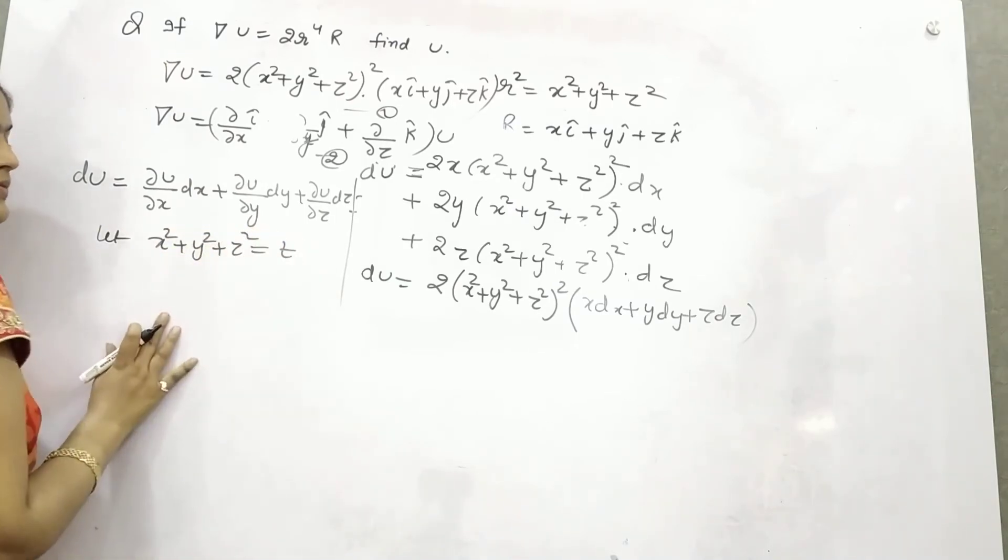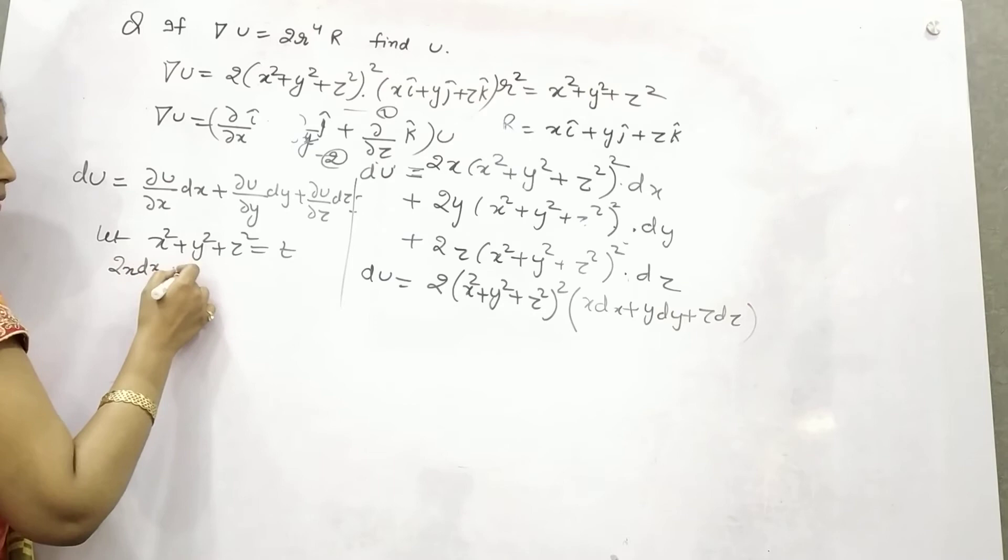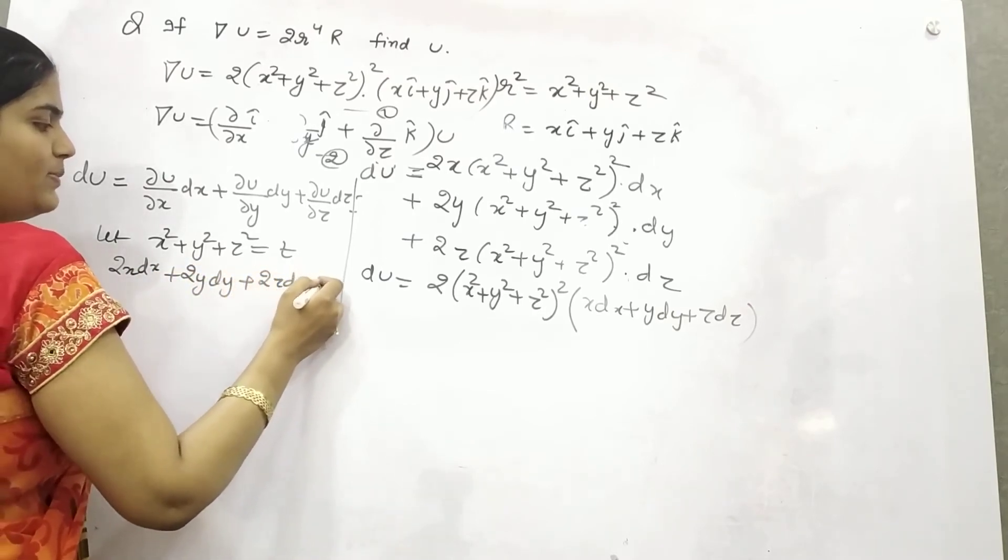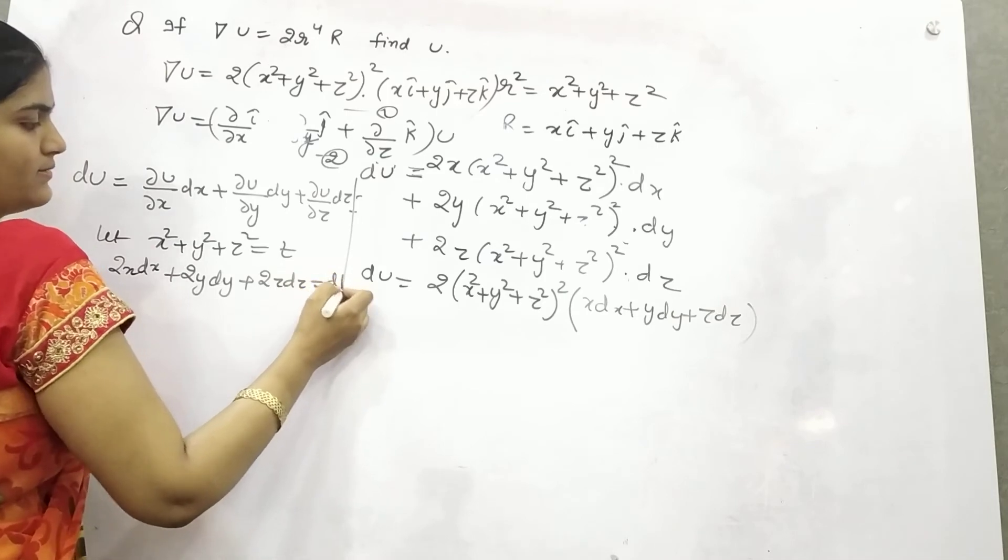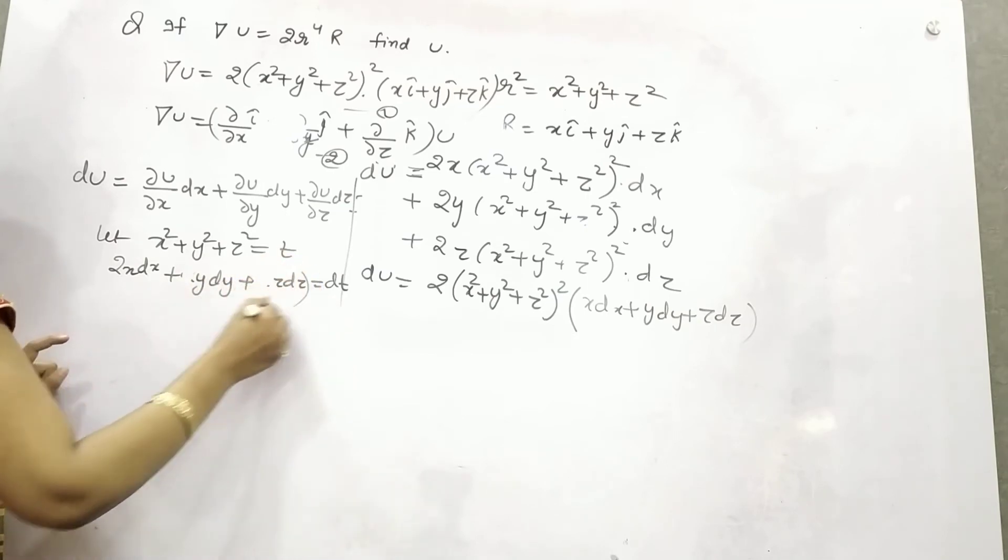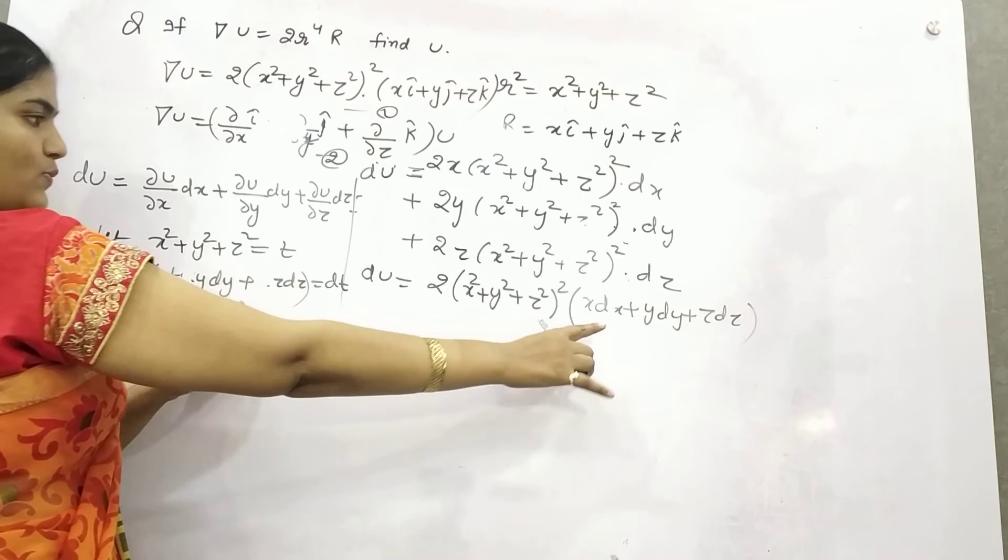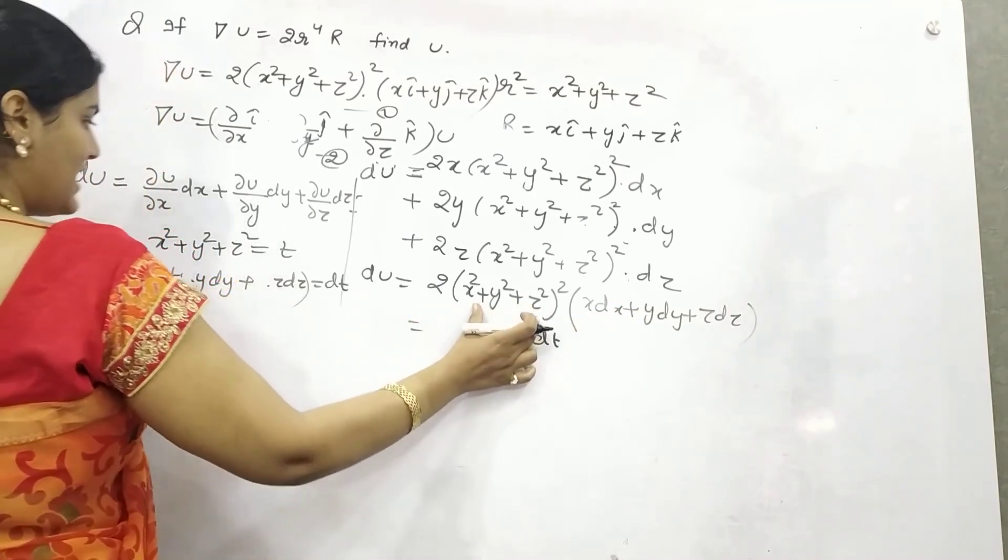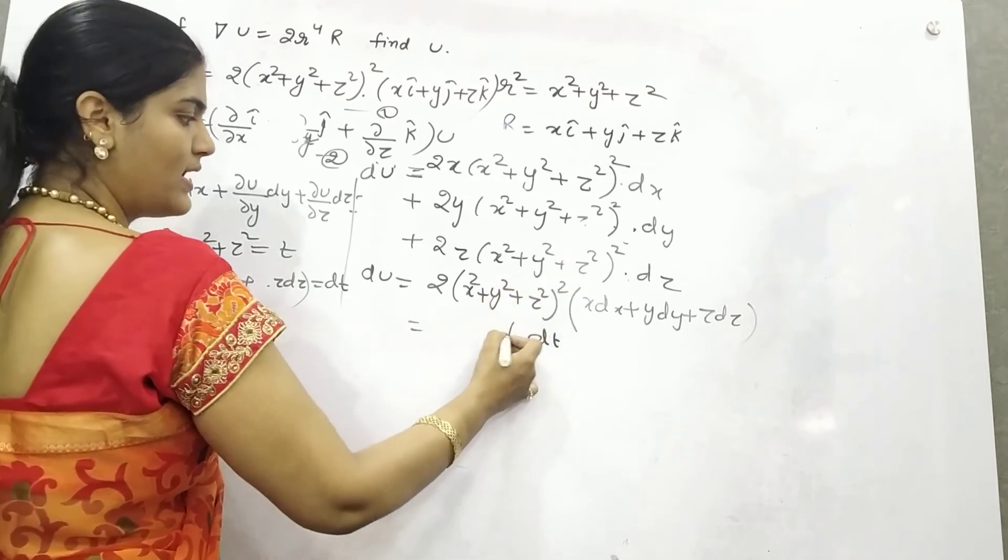So what I'm doing: if you see, if I let x² + y² + z² as t and differentiate it, 2x·dx + 2y·dy + 2z·dz will be dt. So that means you can take 2 common.